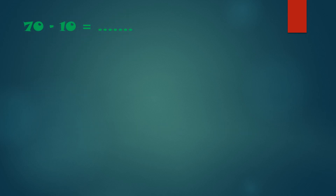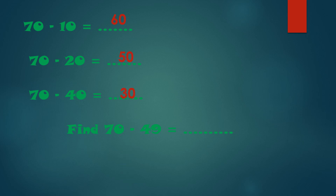Let's see this: 70 minus 10, 70 minus 20, 70 minus 40. Find 70 minus 49. 70 minus 10 is 60, 70 minus 20 is 50, 70 minus 40 is 30. So 70 minus 49 is 21.